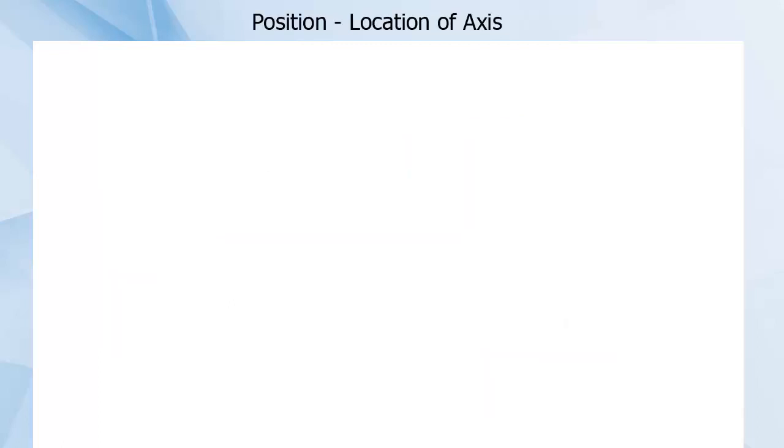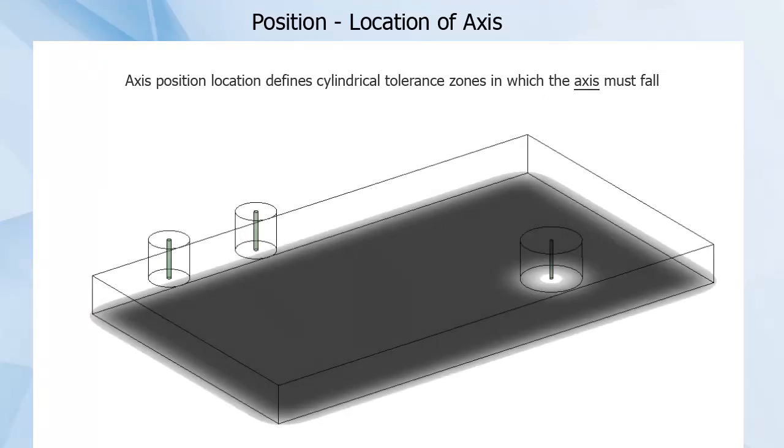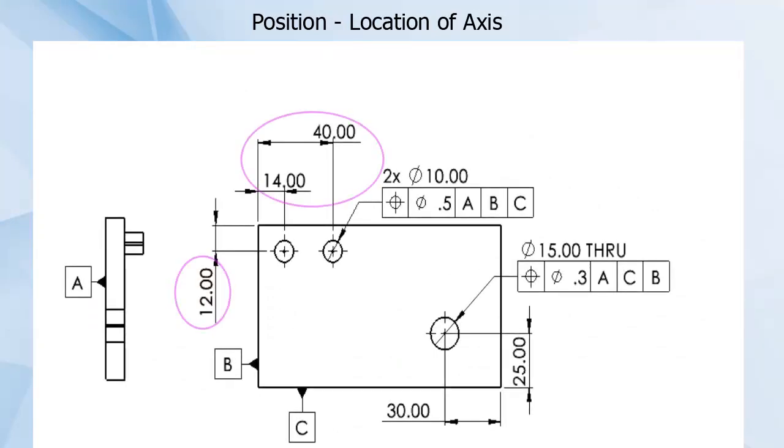In each of these cases, the position location defines a cylindrical tolerance zone within which the axis of the hole must fall. The tolerance zone is centered on the true position defined by the location.